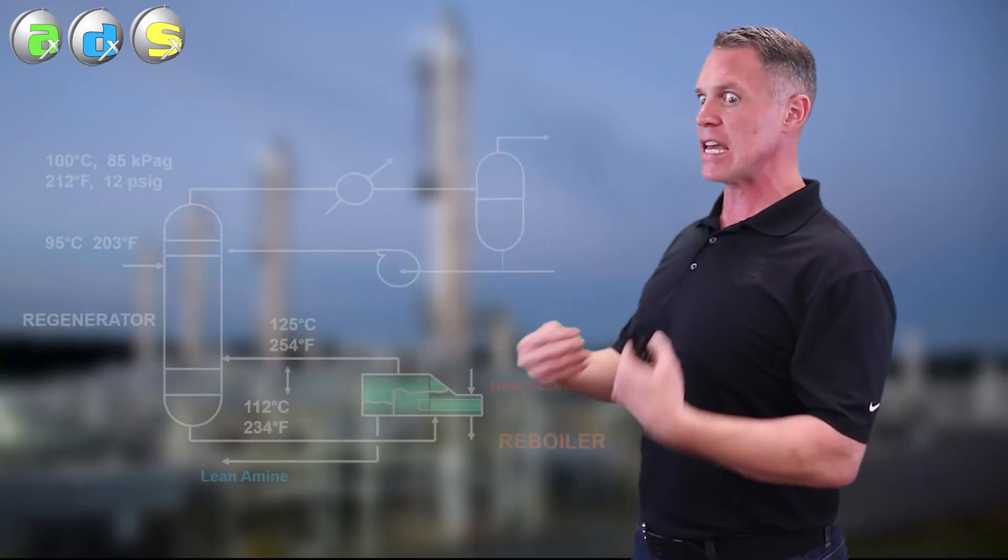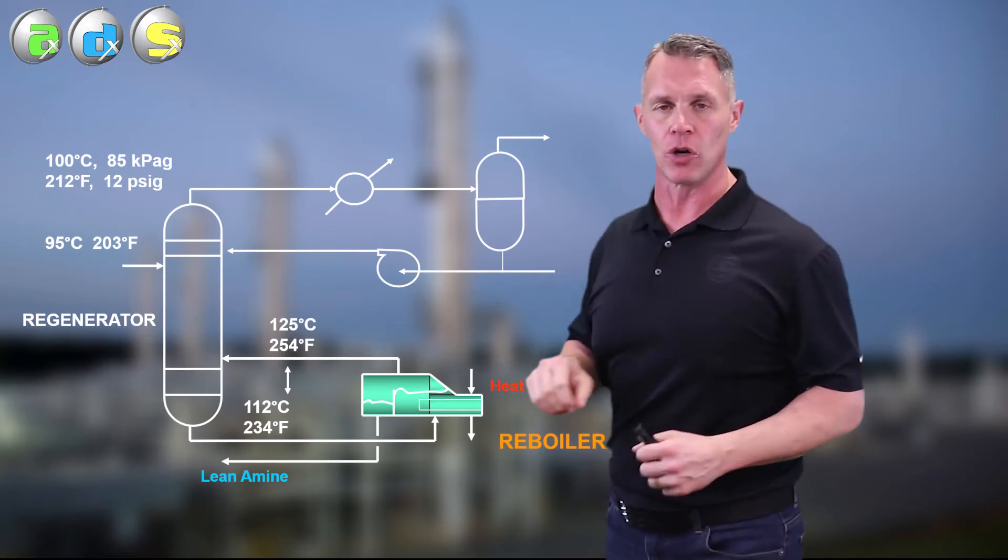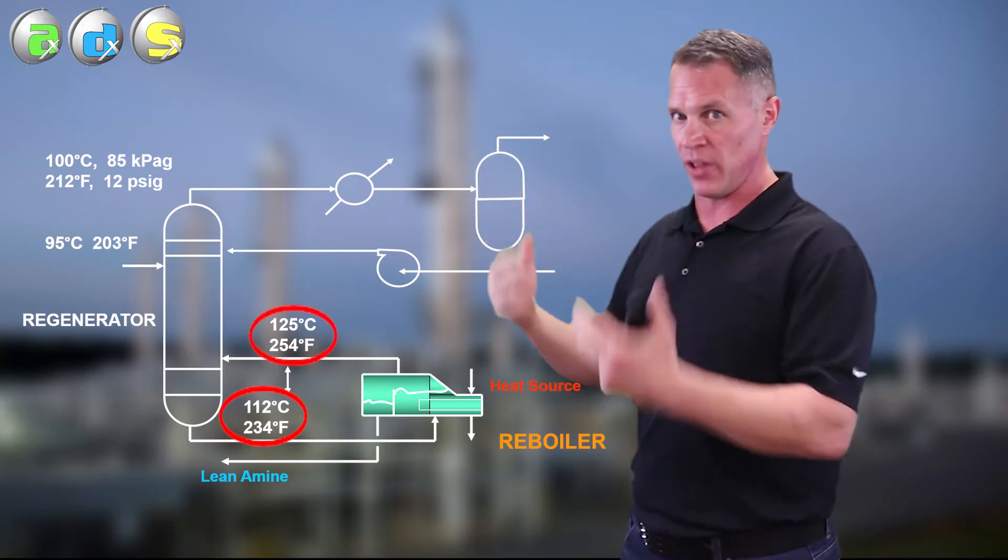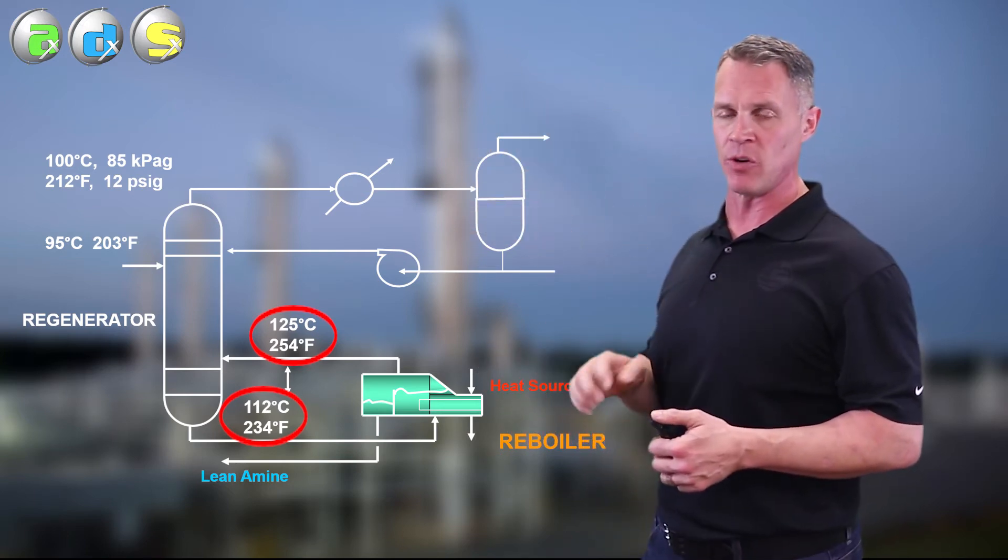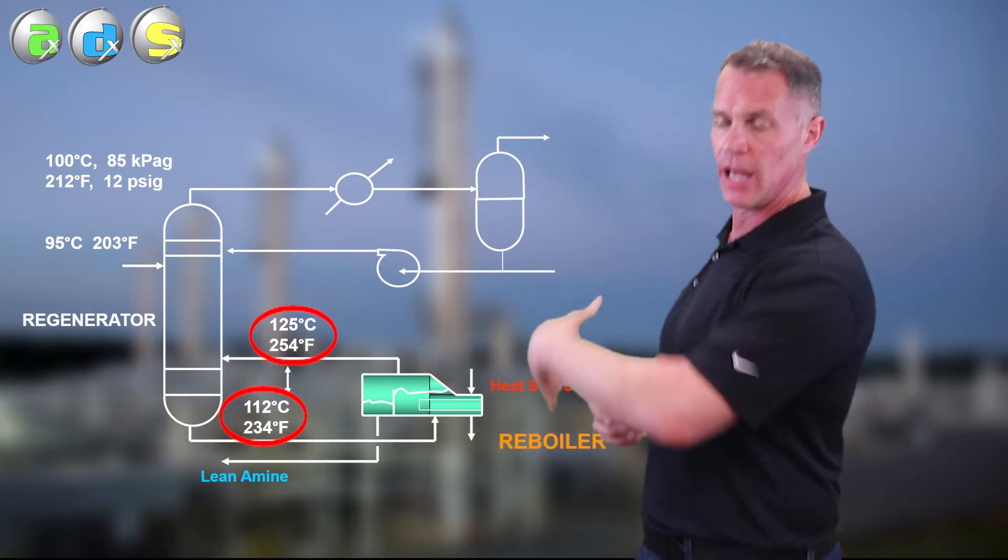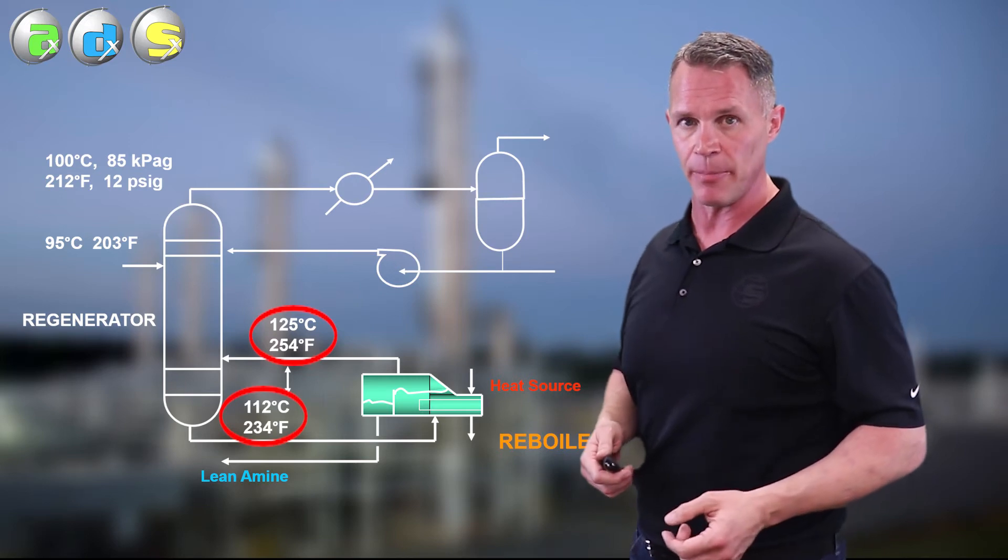Now, how could the operators have known this was happening? Most regenerators do not have temperature indicators throughout. So they don't know what the temperature profile is. And they therefore don't know what's happening to the CO2 in there. Well, if you're lucky, your DCS screen will have temperature of the liquid feeding the reboiler as well as coming out of the reboiler. Or the reboiler temperature itself, either one. What you do not want is there to be a difference in temperature, more than a couple of degrees difference in temperature. Basically, you don't want cold amine into a reboiler and then hot amine coming out. Because that tells you that the reboiler is having to heat up the amine.